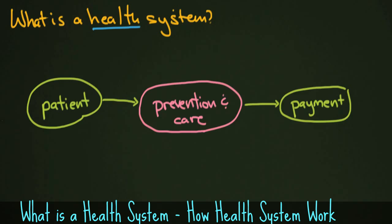How this works in a traditional, liberal economic sense is the patient goes to a hospital or a clinic, they get their care, and then they pay for it. Most of the prevention, they do themselves — that's kind of an agreement done with a doctor. The prevention work would be the doctor saying 'don't do this,' the patient doesn't do it, and if they do, they pay for it. That's just a very simple system.